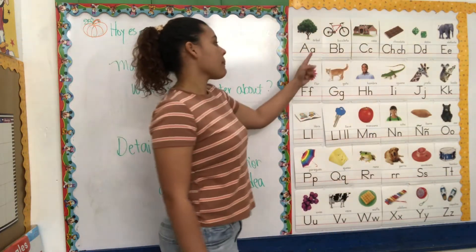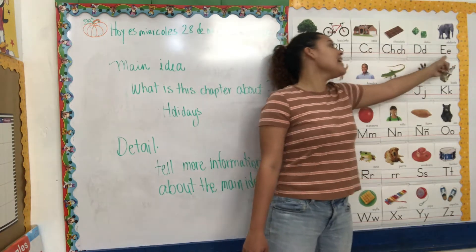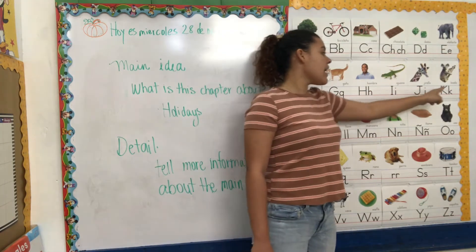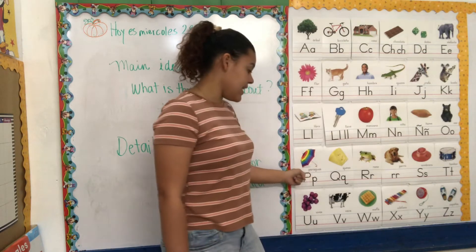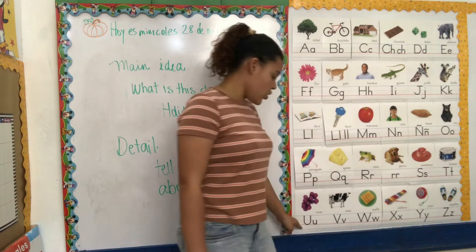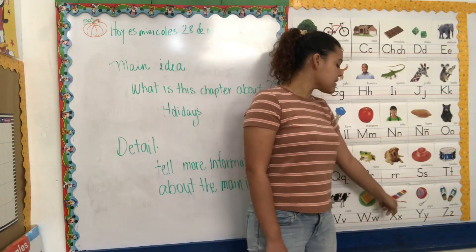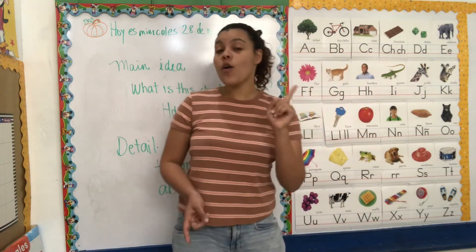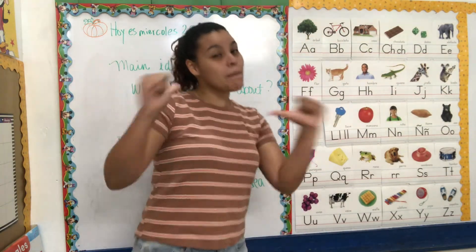Now let's sing this song. A, B, C, D, E, F, G, H, I, J, K, L, M, N, O, P, Q, R, S, T, U, V, W, X, Y, Z. Now I know my ABCs. Next time, won't you sing with me?